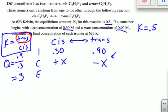So anyway, what are our equilibrium concentrations then? It's going to be 0.3 plus x. And this is going to be 0.9 minus x. And so that is what we've set up.